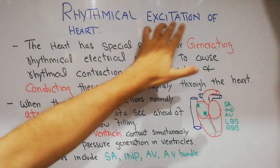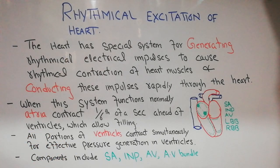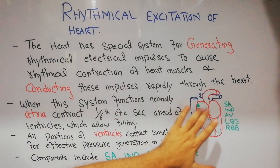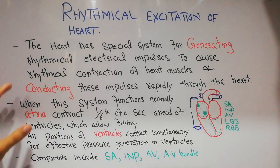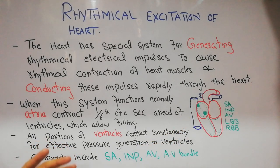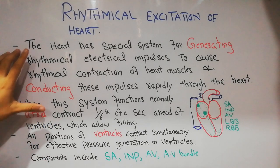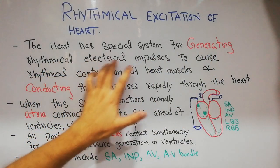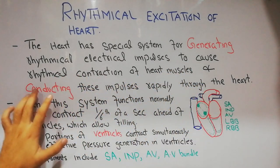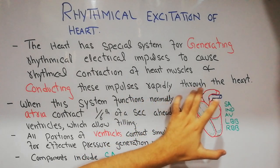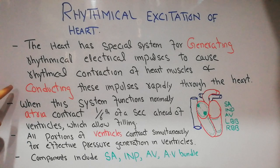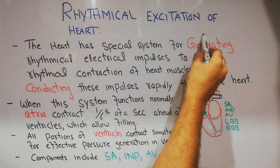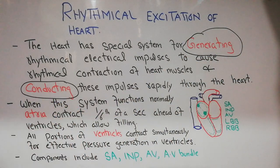Today we are going to discuss the rhythmical excitation of the heart — how the heart contracts, how the rhythm or impulse for the contraction of the atria and ventricles are generated, how those impulses are conducted to different parts of the heart, and how they coordinate the atria and ventricles. The heart has a specialized system for generating electrical rhythmical impulses and conducting these impulses rapidly through the heart.